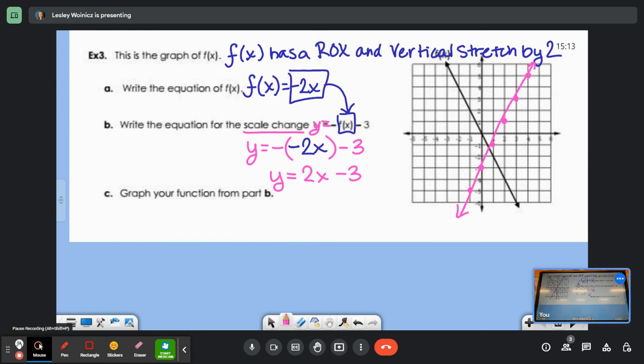So here's a fun question. On the last two examples our resulting function got either steeper or less steep. Did that happen here? No, it's the same amount of steepness, right? It just had a change in sign. So we're going to say that this has the same steepness, but we had a reflection, and we had a shift down three units.